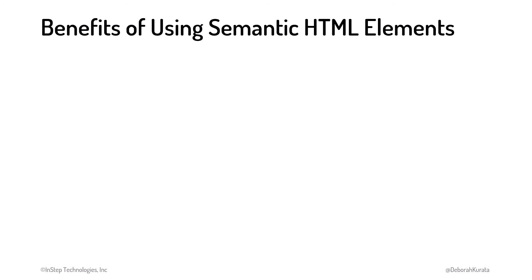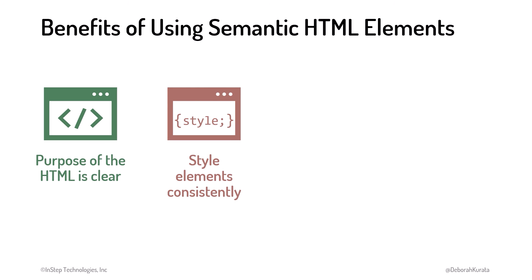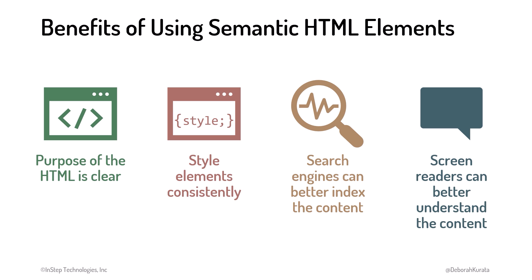There are benefits of building markup using semantic elements instead of more generic elements. The purpose of the HTML code is clear. We can style elements consistently so every footer looks the same, for example. Search engines can better understand and index the content. And screen readers can better understand the content to help visually impaired users. We'll talk more about semantics as we examine HTML elements throughout this course.